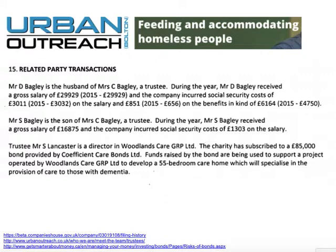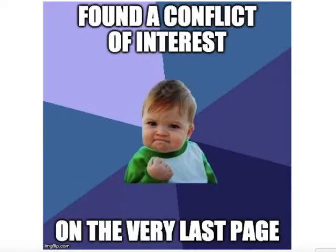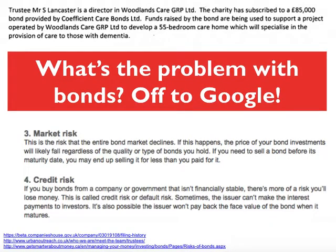This made me quite curious and the first question was: have I found a conflict of interest on the very last page? The first thing to address is the idea of bonds — what is a bond, and is this a potential problem? Should charities be investing money in bonds? Are bonds a safe place to put your money? It doesn't look particularly good when you look into bonds. There is a risk that the charity could lose this money, which ultimately is money donated by donors or given by local councils funded by taxpayers.